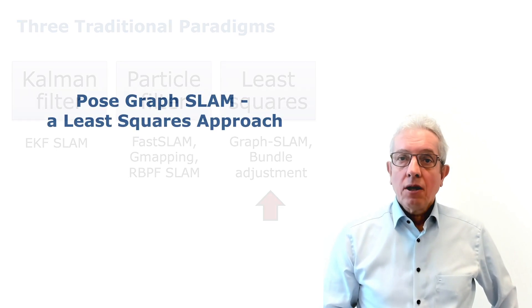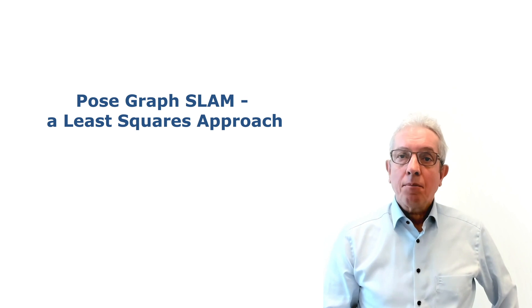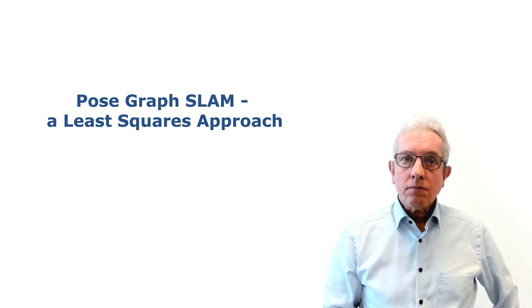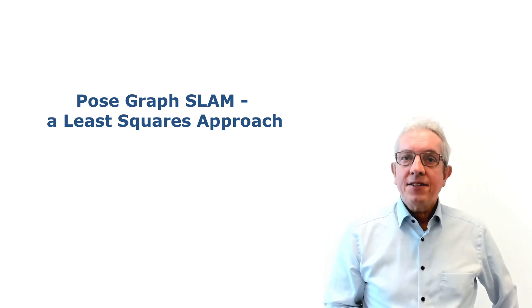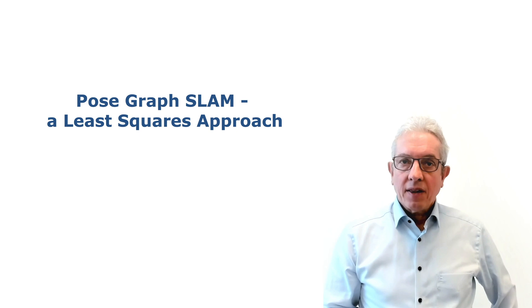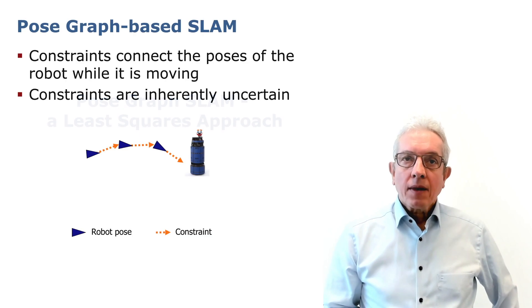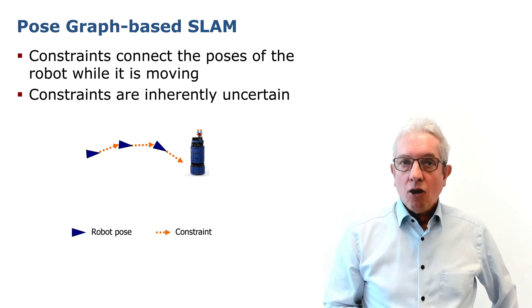Here in this tutorial, we're going to talk about the graph SLAM type of solutions. So what is graph SLAM? It is basically the least squares approach to solving the SLAM problem. In order to do this, we have to formulate the overall problem as a pose graph.